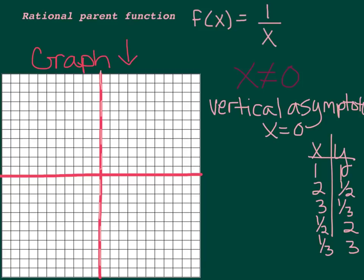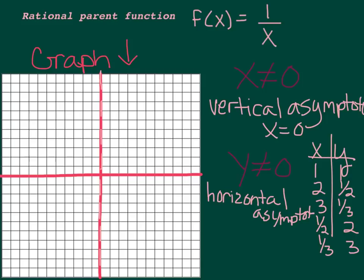If you look at this, y will never equal 0. There is nothing we can plug in for x that will give us a y value of 0, because if we plugged in 0 for x, we would get an undefined result. So y can't equal 0 either. That means we have a horizontal asymptote at y equals 0. So sketch that in along the x-axis. Our two asymptotes happen to fall on the axes. We've got a point at 1,1; 2, 1 half; 3, 1 third; 4, 1 fourth — it approaches but never touches the asymptote.